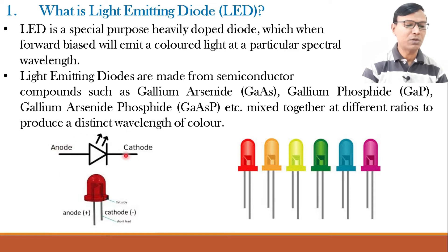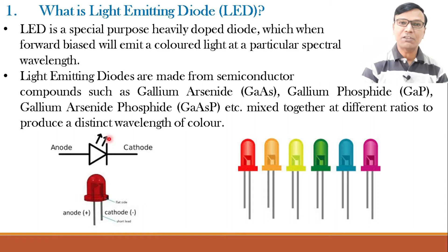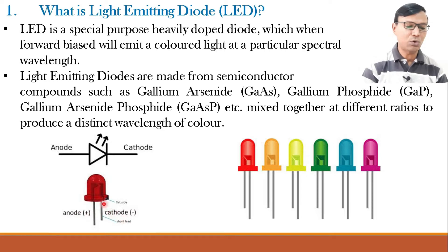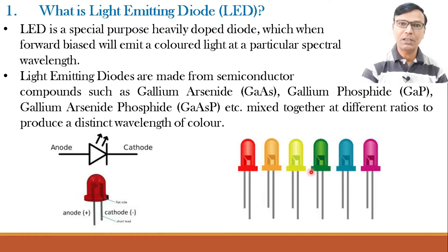This is the symbol of a light emitting diode. The symbol is similar to the symbol of a p-n junction diode, with the difference that here two arrows are coming out, suggesting that it is emitting light. For the photodiode, the arrows were coming inside, suggesting it was detecting light. Here they come out, meaning it is emitting light. The longer lead is known as the anode, the shorter lead is the cathode, and the cathode is towards the flat side of the LED.